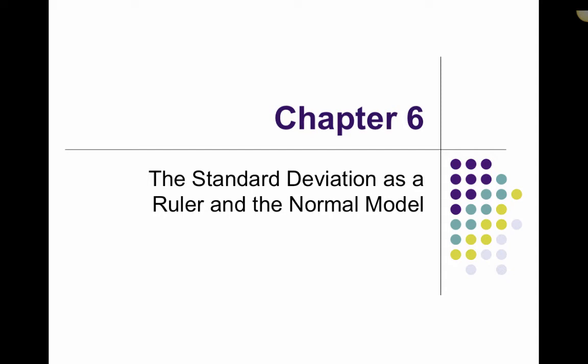Chapter 6 is about using the standard deviation as a ruler and the normal model. The normal model is one of the most important models in statistics and it's used quite frequently in both statistics and life, so this is probably not the only time you'll ever see it.